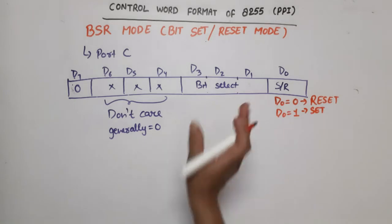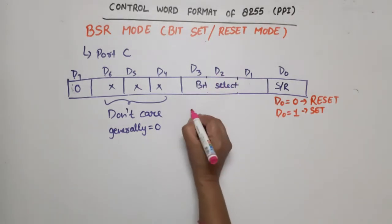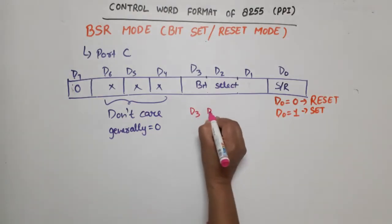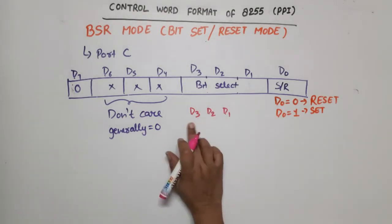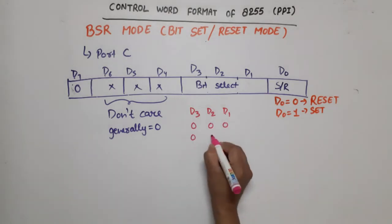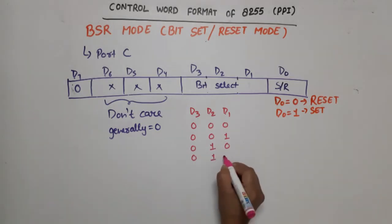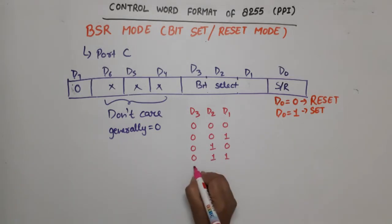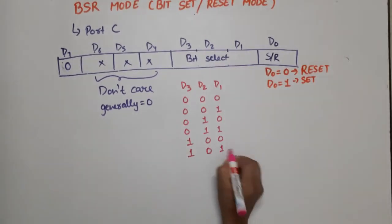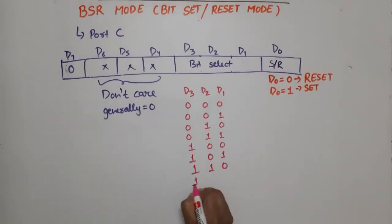Now how will the bits be selected? We have D3, D2, D1 — these are 3 bits, which means 8 possible combinations: 000, 001, 010, 011, 100, 101, 110, 111.